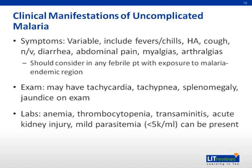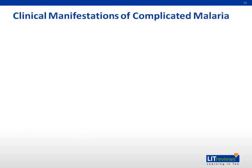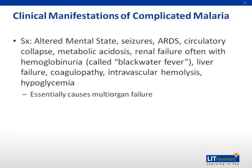Malaria is considered to be complicated if the patient is obtunded. This is most common with Plasmodium falciparum infection. Symptoms of complicated malaria are variable and can include seizures, acute lung injury or acute respiratory distress syndrome, circulatory collapse, metabolic acidosis, renal failure with hemoglobinuria — called blackwater fever due to the dark urine produced — liver failure, coagulopathy, intravascular hemolysis, and hypoglycemia. It can affect all organ systems and lead to multi-organ failure. On exam, altered mental status, pallor, and petechiae can be present.